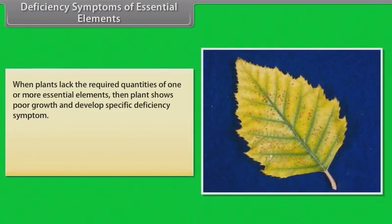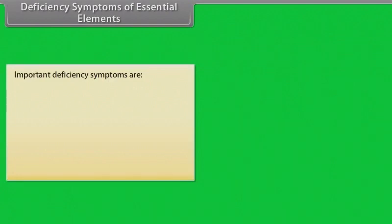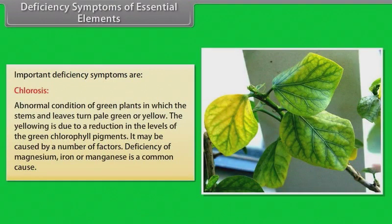Deficiency symptoms of essential elements: when plants lack the required quantities of one or more essential elements, the plant shows poor growth and develops specific deficiency symptoms. The morphological changes in plants due to deficiency of elements are called deficiency symptoms. An important deficiency symptom is chlorosis — an abnormal condition of green plants in which the stems and leaves turn pale green or yellow. The yellowing is due to a reduction in the levels of the green chlorophyll pigments. Deficiency of magnesium, iron or manganese is a common cause.